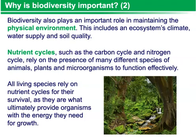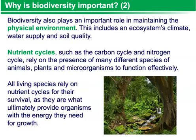Biodiversity also plays an important role in maintaining the physical environment. This includes an ecosystem's climate, water supply, and soil quality. Nutrient cycles, such as the carbon cycle and the nitrogen cycle, rely on the presence of many different species of animals, plants, and microorganisms to function efficiently. All living species rely on nutrient cycles for their survival, as they are what ultimately provide organisms with the energy they need for growth.